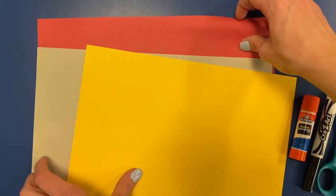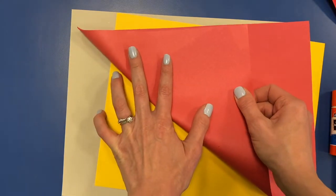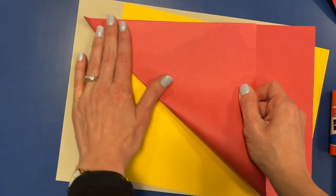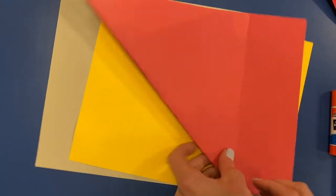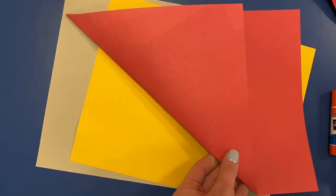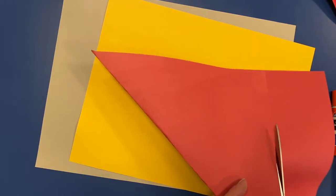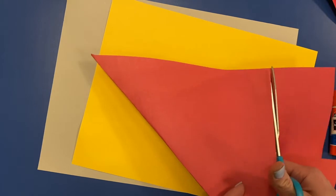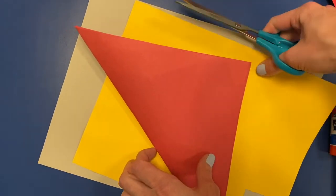So the first thing we're gonna do is pick the color we want to be the body of our bookmark. I'm gonna do red. So I'm taking this red piece of paper and I'm gonna fold this corner up to the edge. Now we're going to cut off this extra bit right here. I'll go ahead and move these out of the way.